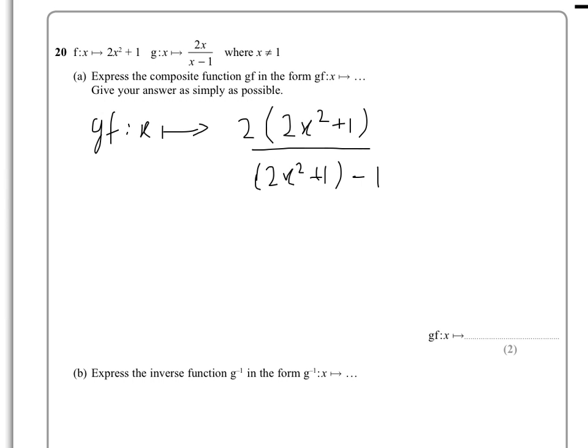So that equals 4x squared plus 2 over 2x squared plus 1 minus 1, and obviously those two cancel out. So therefore, gf of x is...